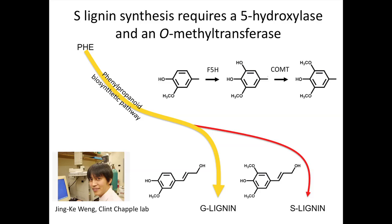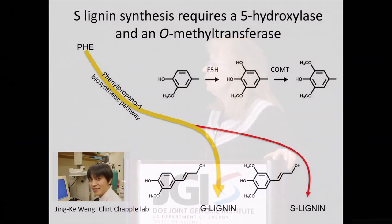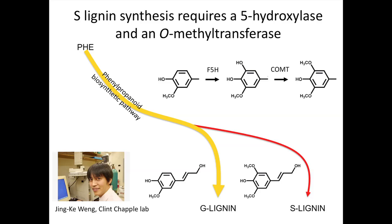Jinka in his lab wanted to know how Selaginella happens to make this particular type of lignin monomer. These are the lignin monomers — this is the G-guaiacyl lignin, this is syringyl lignin. It is synthesized beginning with phenylalanine through the phenylpropanoid pathway, which is really, really complicated, as I've just indicated here with a yellow line. There are two enzymes responsible for making G-lignin and S-lignin: one is F5H, a P450 that adds a hydroxyl group, and the second enzyme is COMT, a methyltransferase that adds a methyl group.